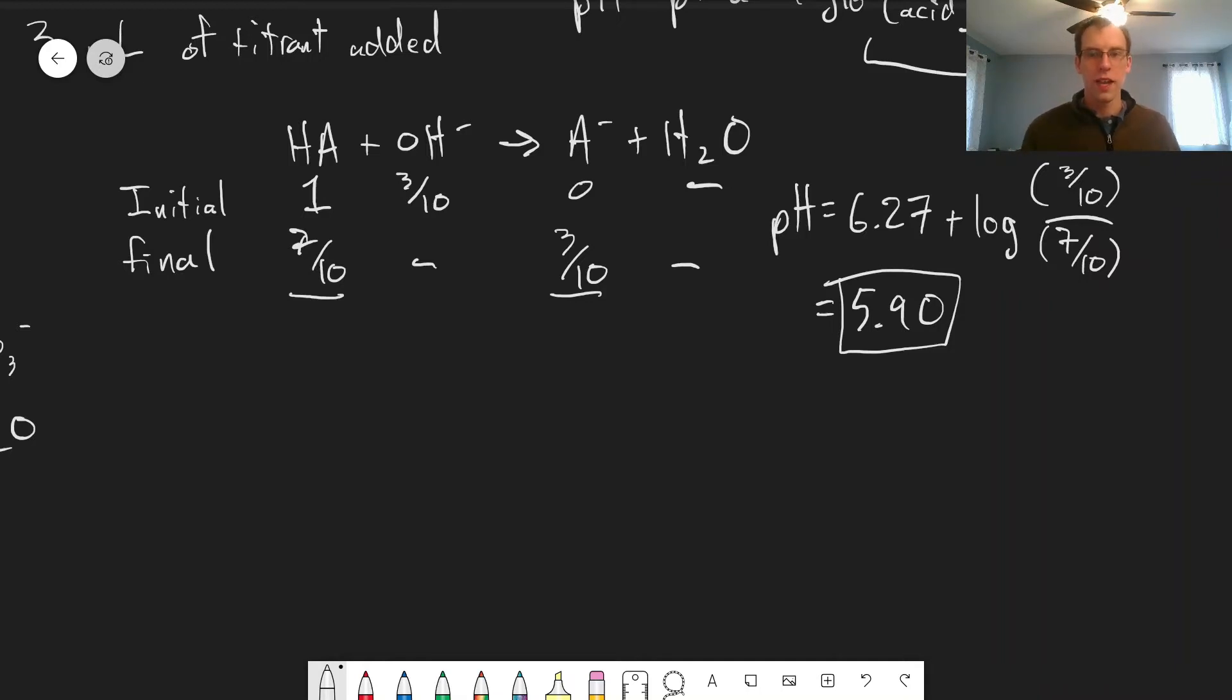One special point on the titration curve is when we are at halfway to the equivalence point. Using the calculation shown above that we were looking at in the last video, at the halfway to the equivalence point we're going to have an equal amount of HA and A-.